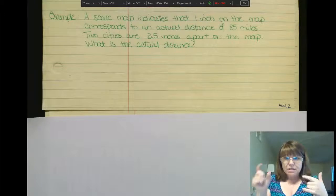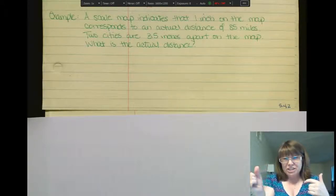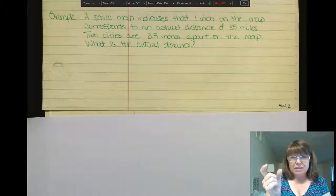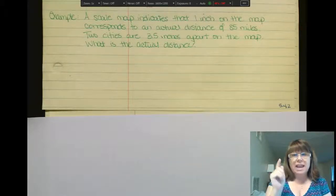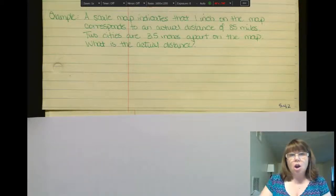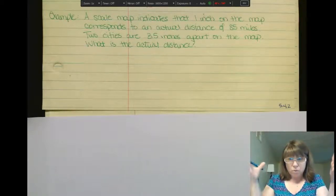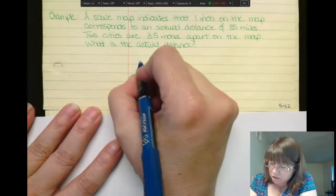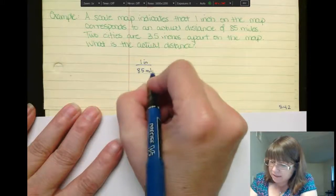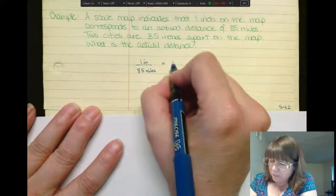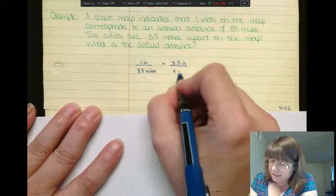Have you ever had to read a map and there's a little legend that says how long an inch or whatever. There's a legend down there that says how long an inch is in the miles. So let's say we have a map and it is scaled that 1 inch on the map is the actual distance of 85 miles. So if two cities are 3.5 inches apart, what is the actual distance that they are in the real world? So let's say that 1 inch on the map corresponds to 85 miles in the real world. So if I need 3.5 and I've measured 3.5 inches for the two cities, how far is it in the real miles?